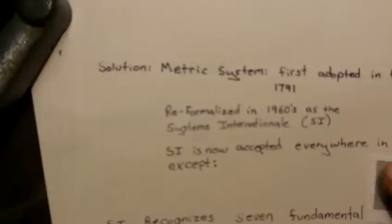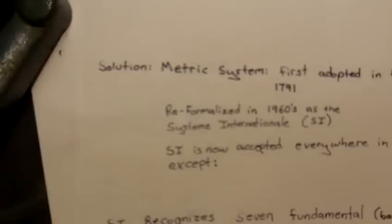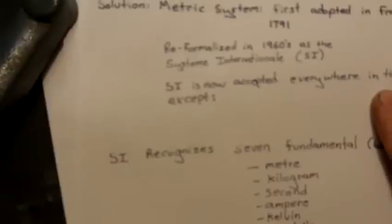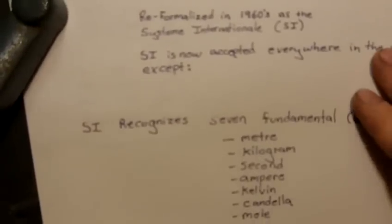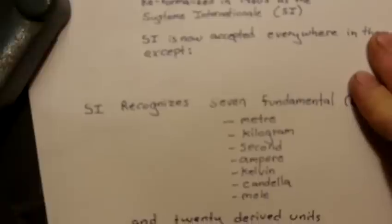So the SI system recognizes seven fundamental or base units. For length, they talk about the meter. For mass, the kilogram. For time, the second. For current, there's the ampere. For temperature, there's the Kelvin. For luminosity, there's the candela. And for amount of a substance, there's the mole. So these are the seven base fundamental units of the metric system.